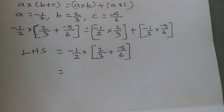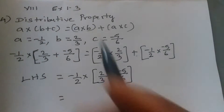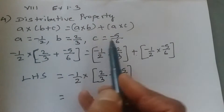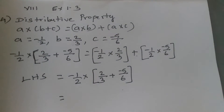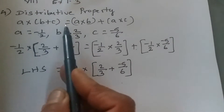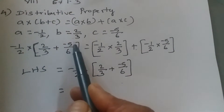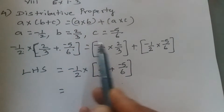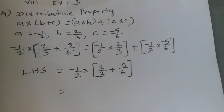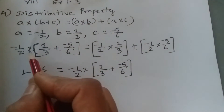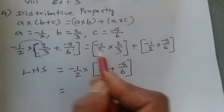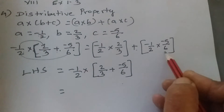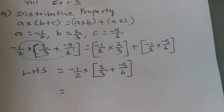So the property is a × (b + c) = a × b + a × c. Substituting the values: LHS is −1/2 × (2/3 + (−5/6)), and RHS is −1/2 × 2/3 + −1/2 × (−5/6). We are distributing multiplication over addition. Now let us first simplify the LHS.